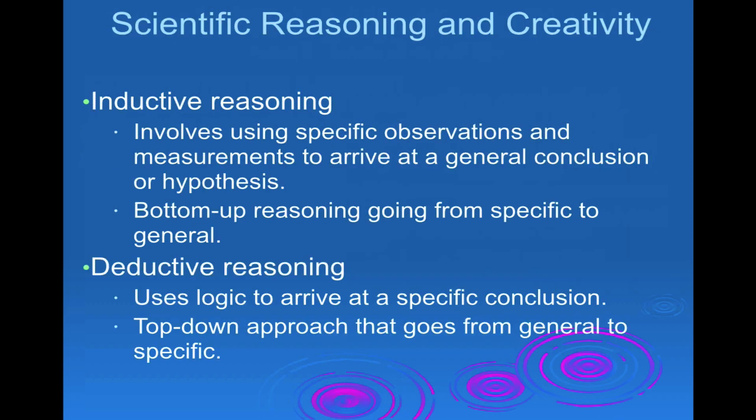We can use inductive reasoning — basically using specific observations to reach a conclusion about a hypothesis — also called bottom-up reasoning, going from very specific observations and broadening out. Versus deductive reasoning, which uses logic to arrive at a specific conclusion. Top-down reasoning is the opposite of bottom-up: going from general concepts and narrowing down to very specific causalities of processes.